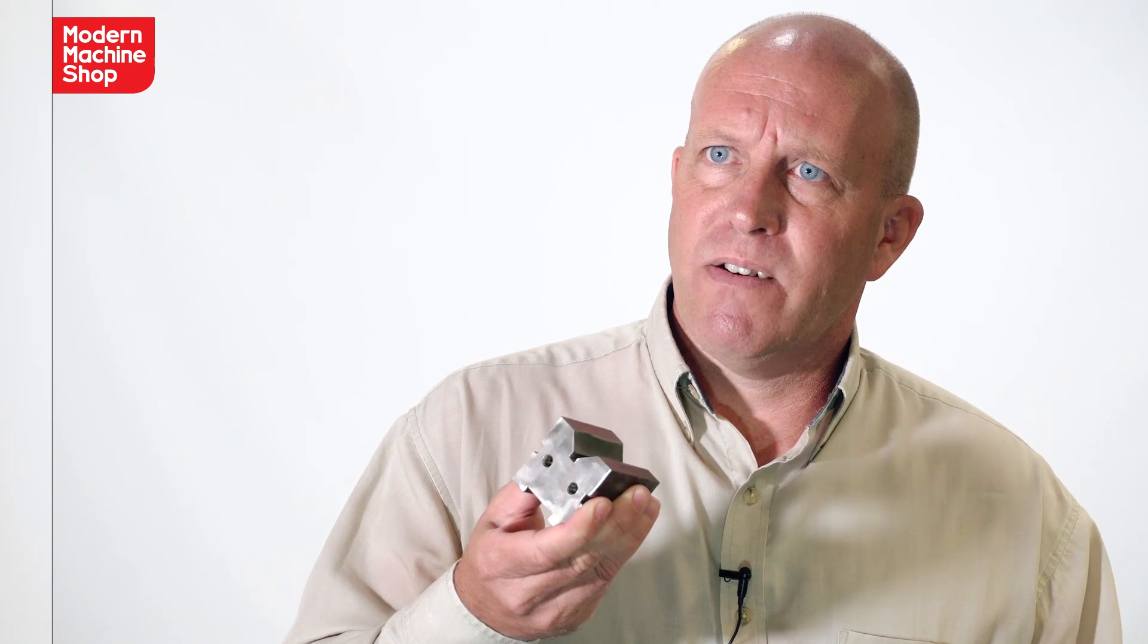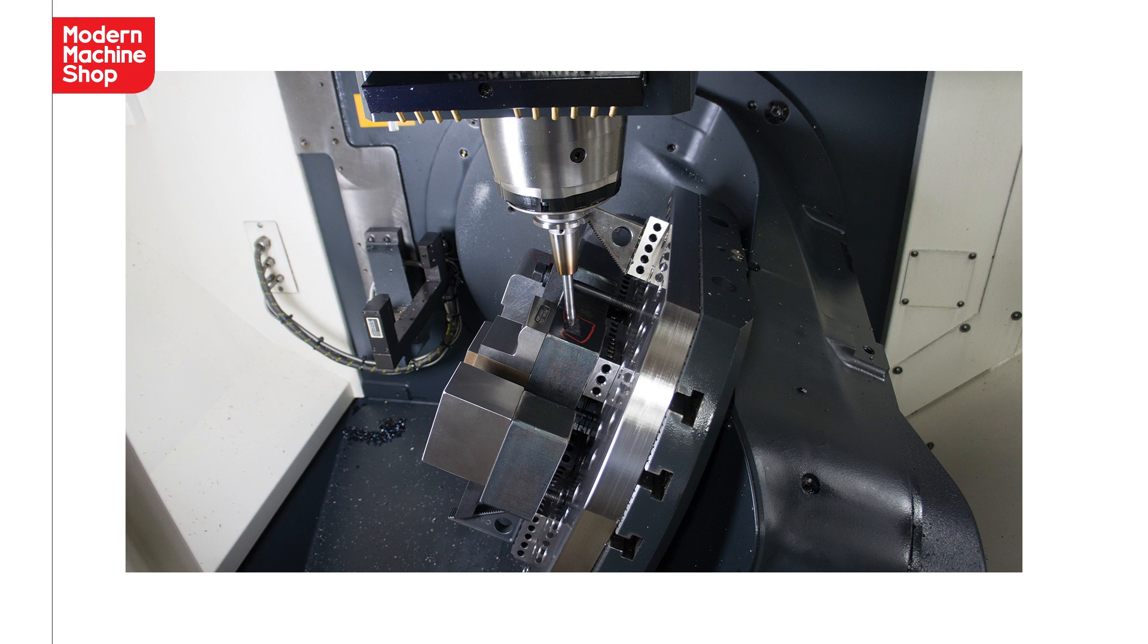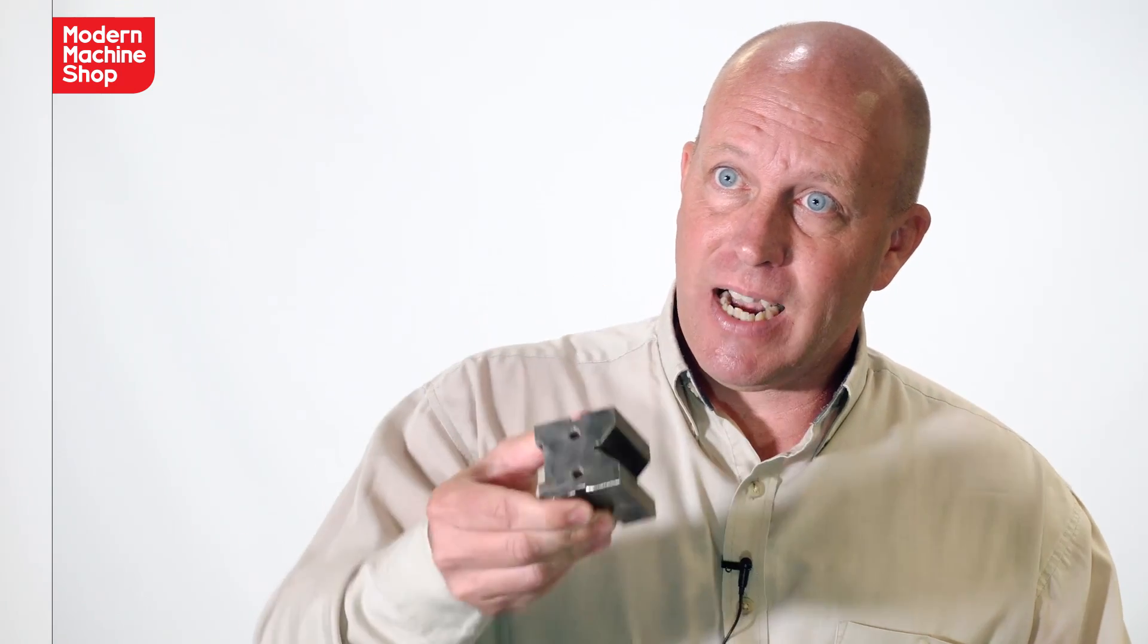But think of a part like this as a five-axis part. You probably have some sort of blocky prismatic part in your shop that you're running right now. What if you could clamp it once and access five sides of this part in one clamping? Think about how that can minimize the number of times this part is touched during production.